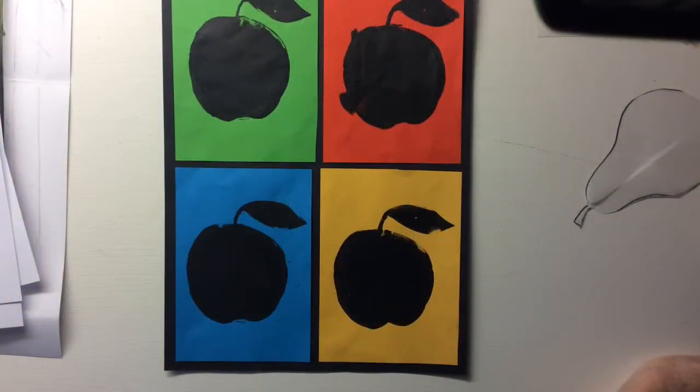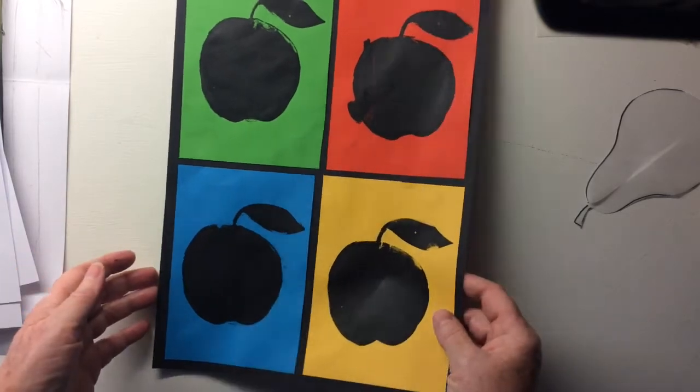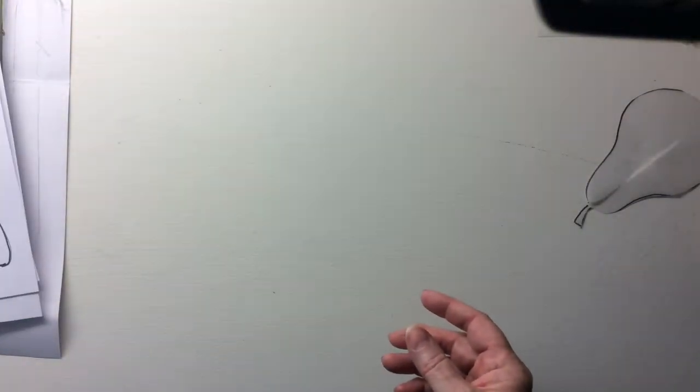Today we're going to be making a pop art print inspired by Andy Warhol. What we're going to do is make a stencil and print it four times on four different colours and put it together so it looks like one of Andy Warhol's type of prints.